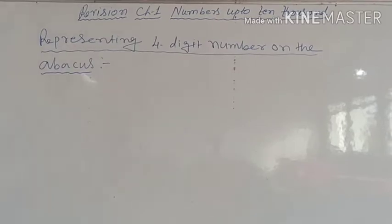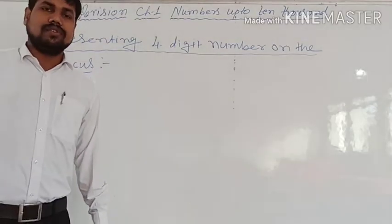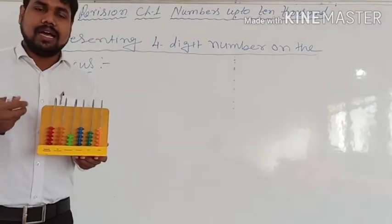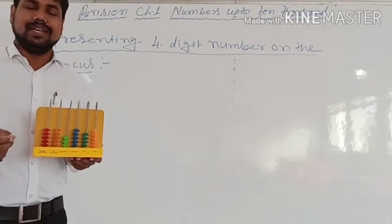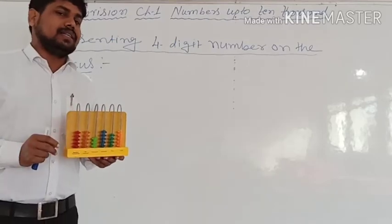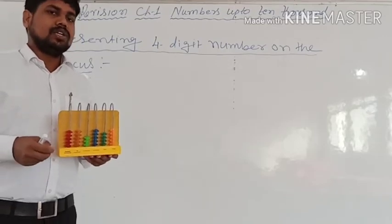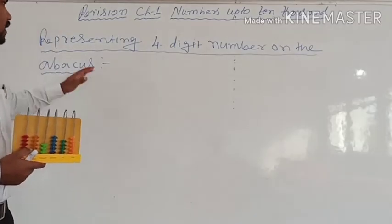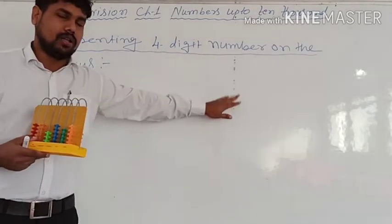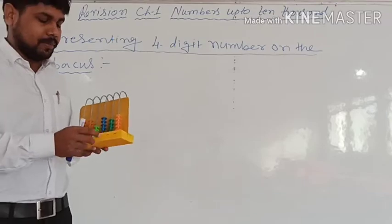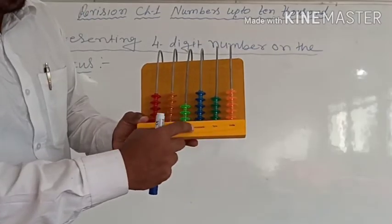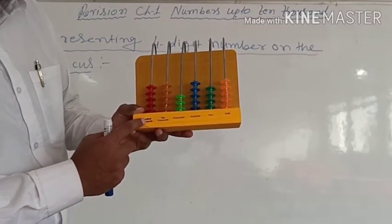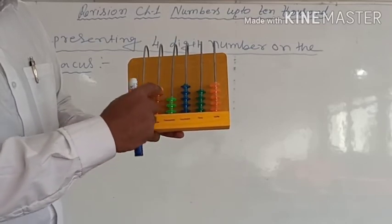Our next topic is representing four-digit numbers on the abacus. You will have already learned about the abacus — it is a calculating device used in earlier days. The places on an abacus are: units (ones), tens, hundreds, thousands, ten-thousands, and hundred-thousands. We will learn up to ten-thousands only.